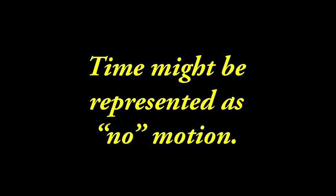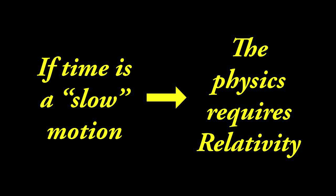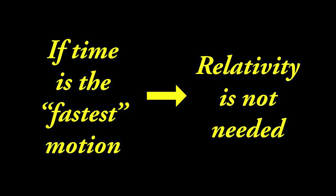Time might be represented as no motion — after all, the slowest motion is essentially no motion. Second, time might be represented as some intermediate motion; this is where relativity is required, and generally this type of physics is difficult. Third, time might be represented as the fastest known motion, where relativity is not required.